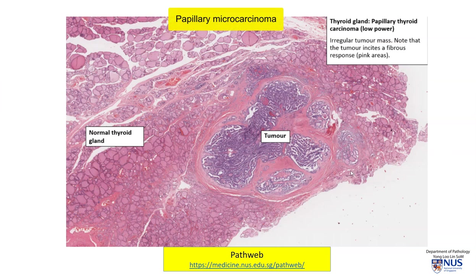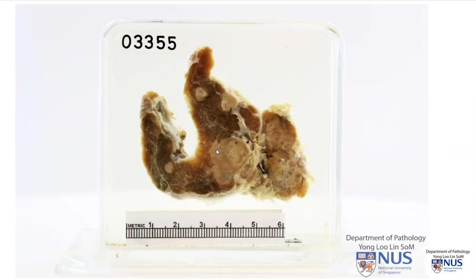Finally, this is an example of papillary microcarcinoma. We don't have a scale attached here, but this entire tumor mass is less than 1 cm in maximal dimension. In summary, this is an example of papillary thyroid carcinoma. In this case, we can see multiple tumor masses, which appear pale tan in color, with areas that appear to be infiltrating into the thyroid parenchyma.